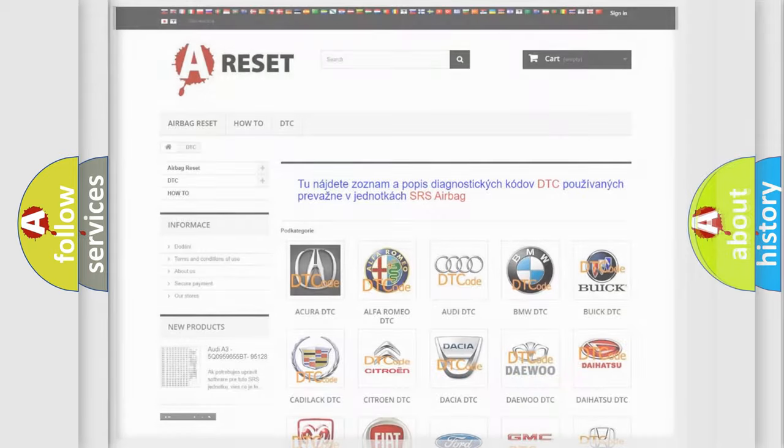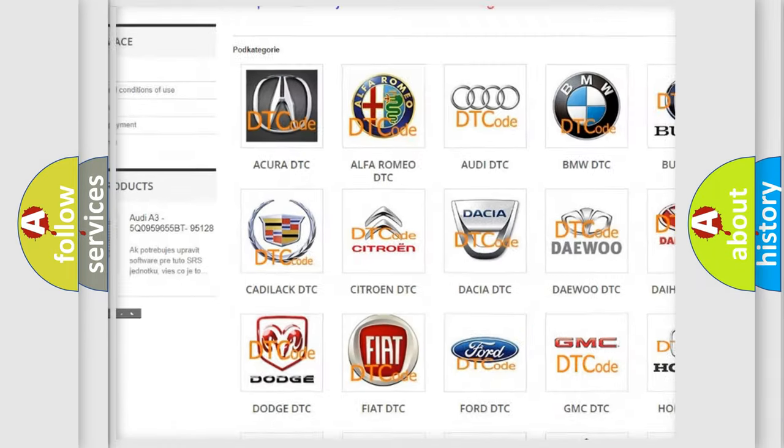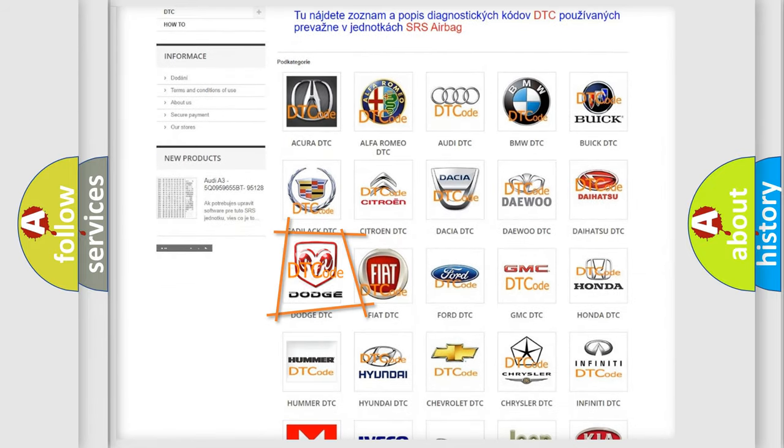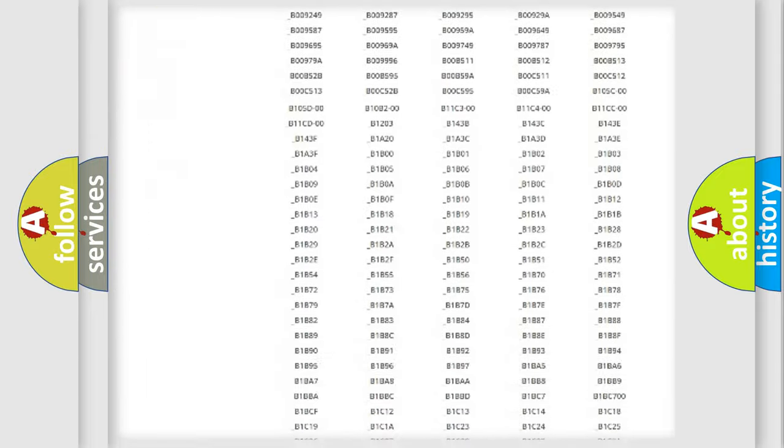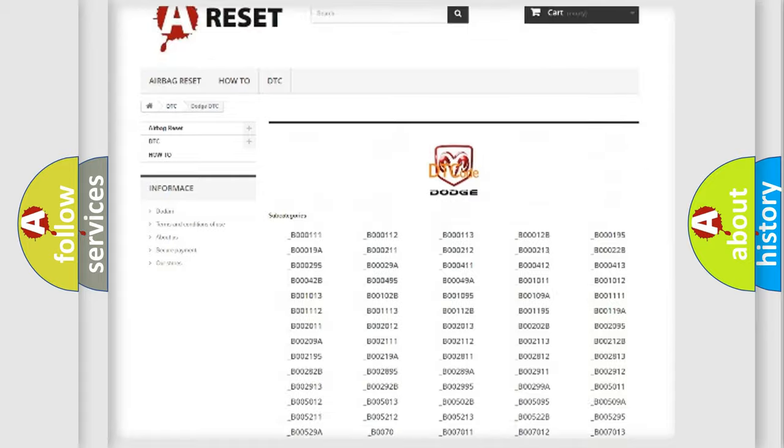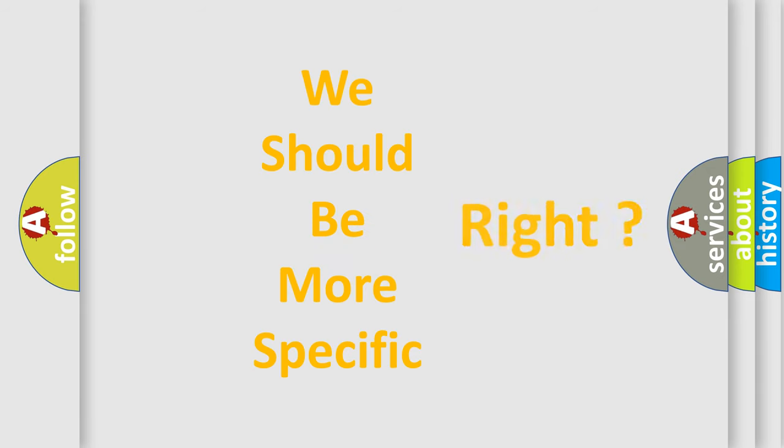Our website airbagreset.sk produces useful videos for you. You do not have to go through the OBD2 protocol anymore to know how to troubleshoot any car breakdown. You will find all the diagnostic codes that can be diagnosed in Dodge vehicles, also many other useful things. The following demonstration will help you look into the world of software for car control units.